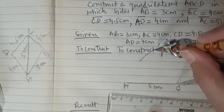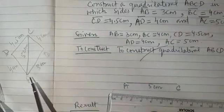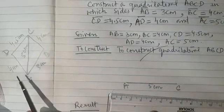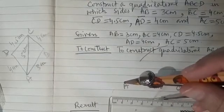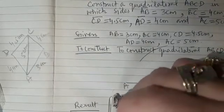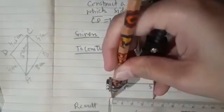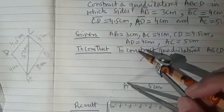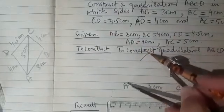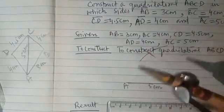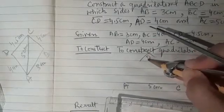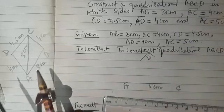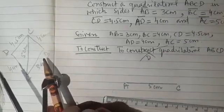After that, since AD is given as 4 cm, I will take the radius as 4 cm, put the compass at A, and cut the previously drawn arc. See how easily we have got this point of intersection — and this is point D.